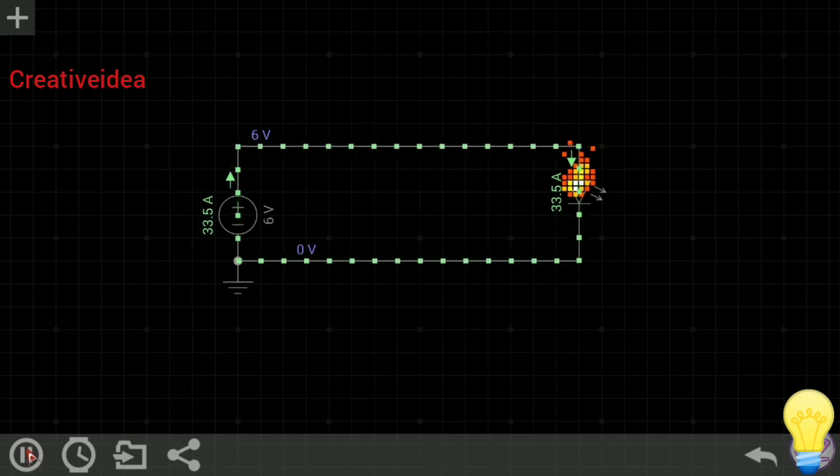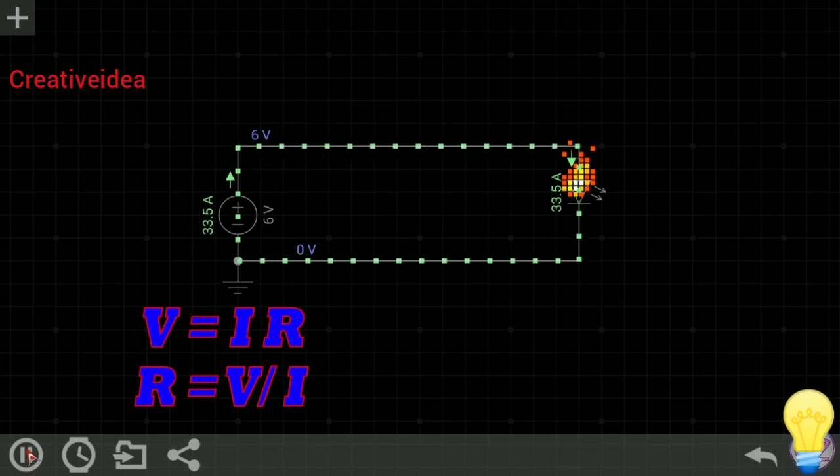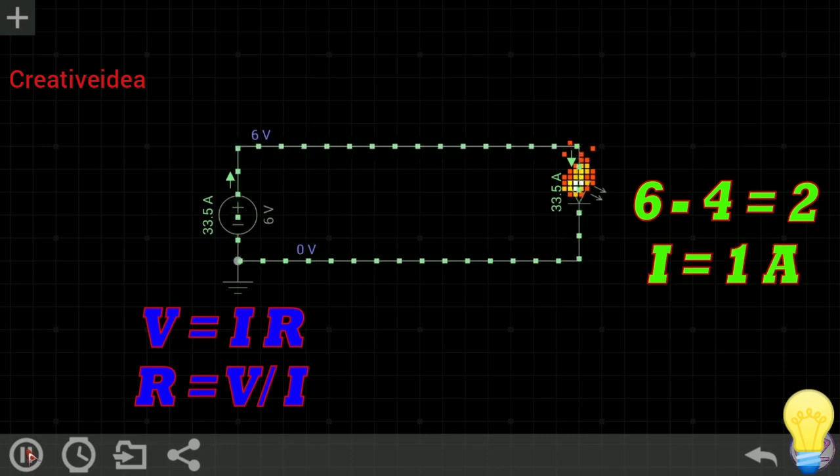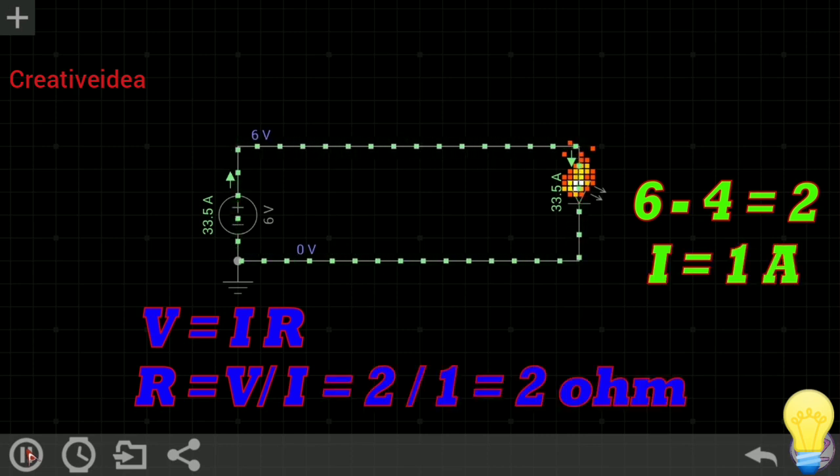V equal to IR. It's Ohm's law. So, R equal to V divided by I. Okay, your source is 6V and LED required 4V. So, you need to drain 2V. And you also need 1A current. Now, set this value on Ohm's law. Easy equation and answer is 2. So, you need 2 Ohm resistance to glow that LED properly.